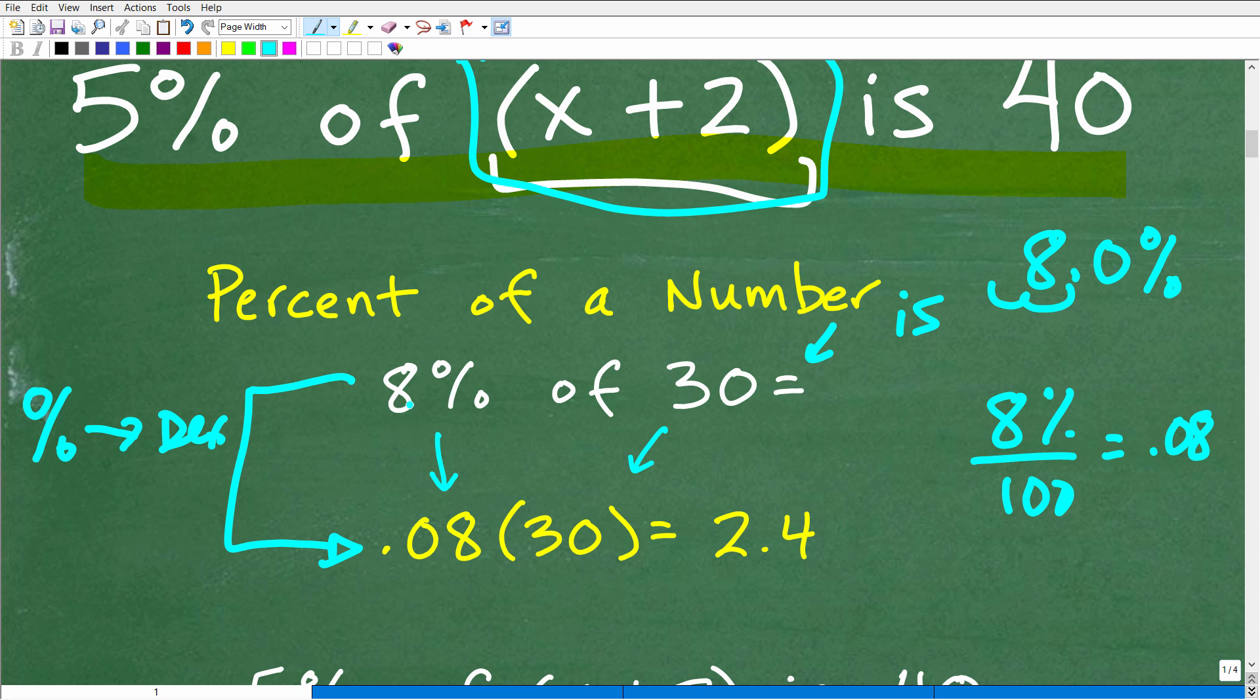So the first skill here that you need to know is how you convert a percent to a decimal. So again, just divide by 100. So 8% is the decimal 0.08. So 8% of 30, what we need to do is change the percent to a decimal, and then we just simply multiply it by that number. So 8% of 30 is going to be 0.08 times 30, and we can use our calculator, and that is 24.